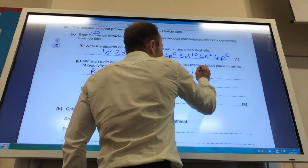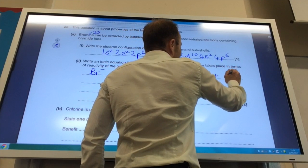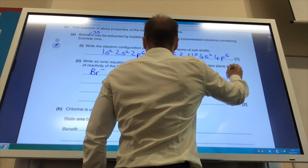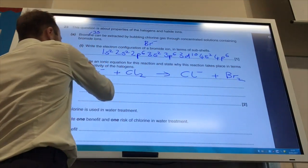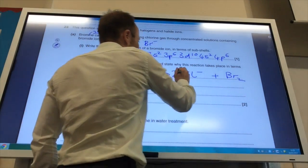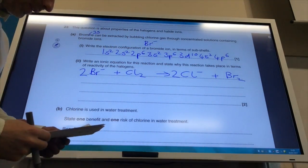That gives you chloride ions, Cl minus, oh no, yeah, and bromine there. Okay, and then to balance it up I need a 2 there and a 2 there.